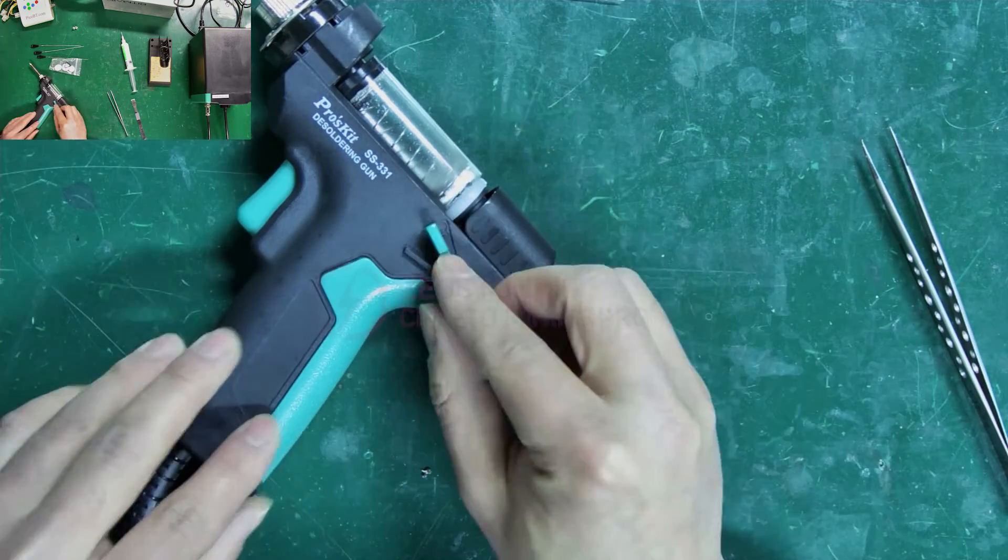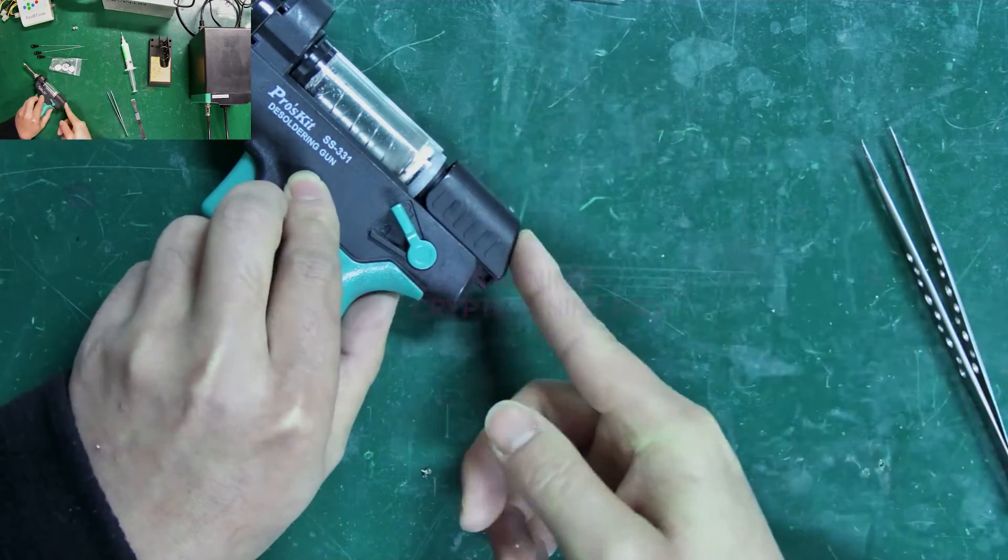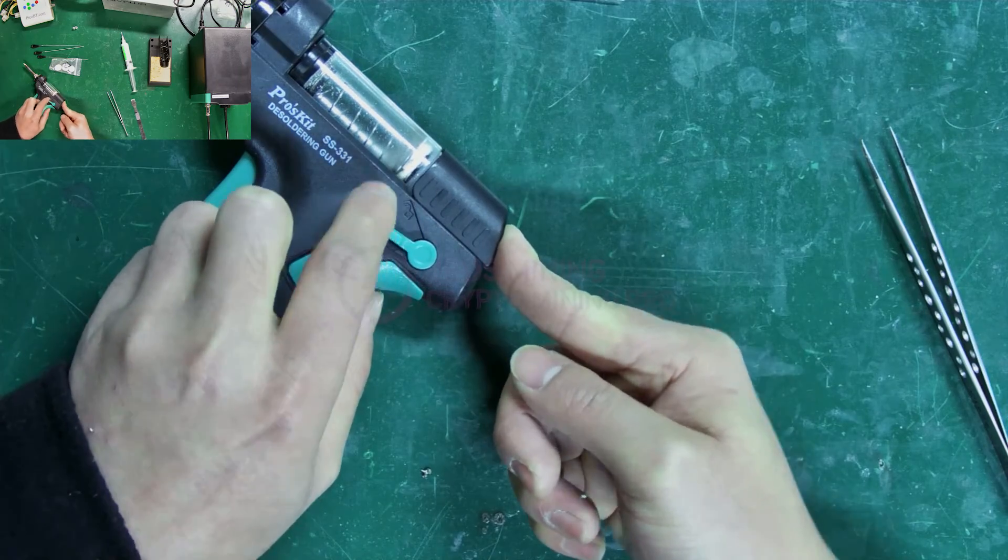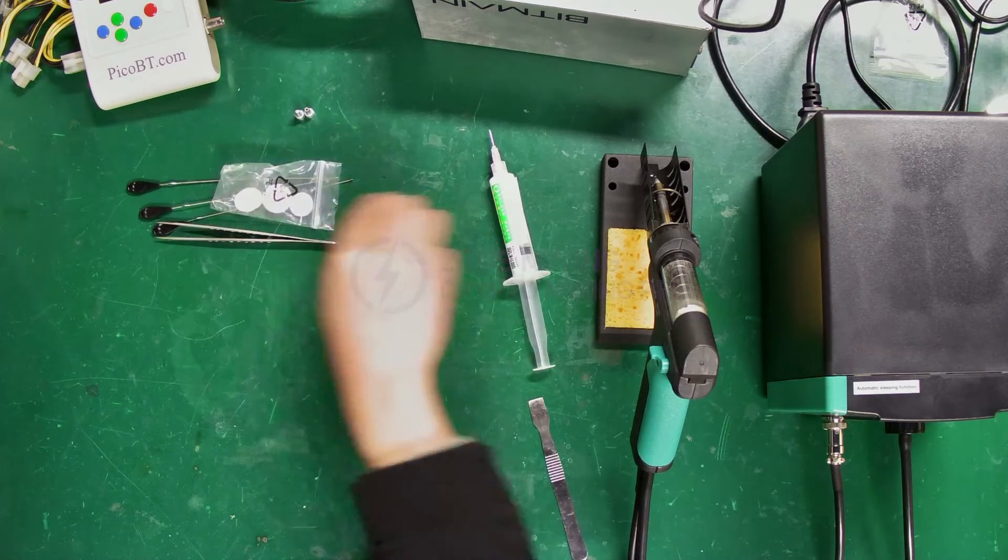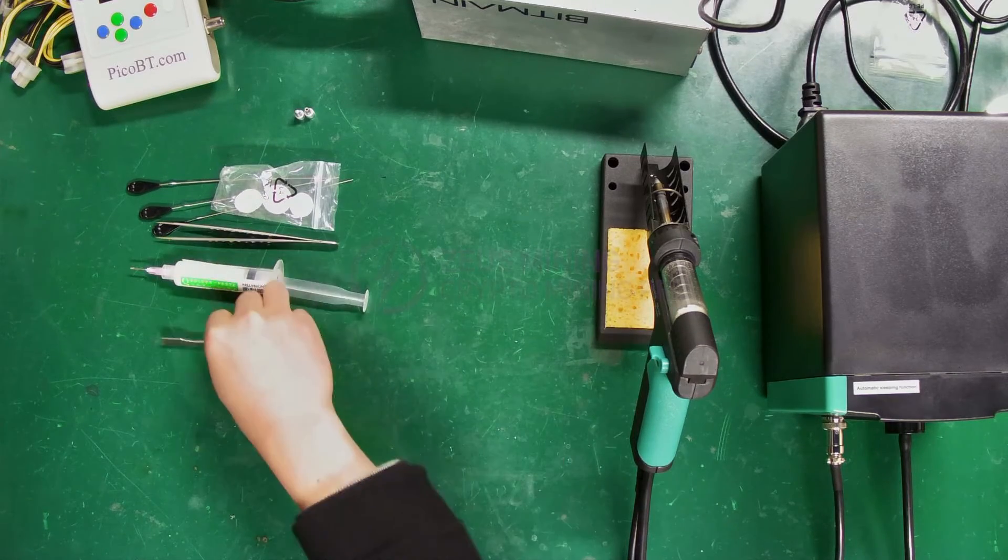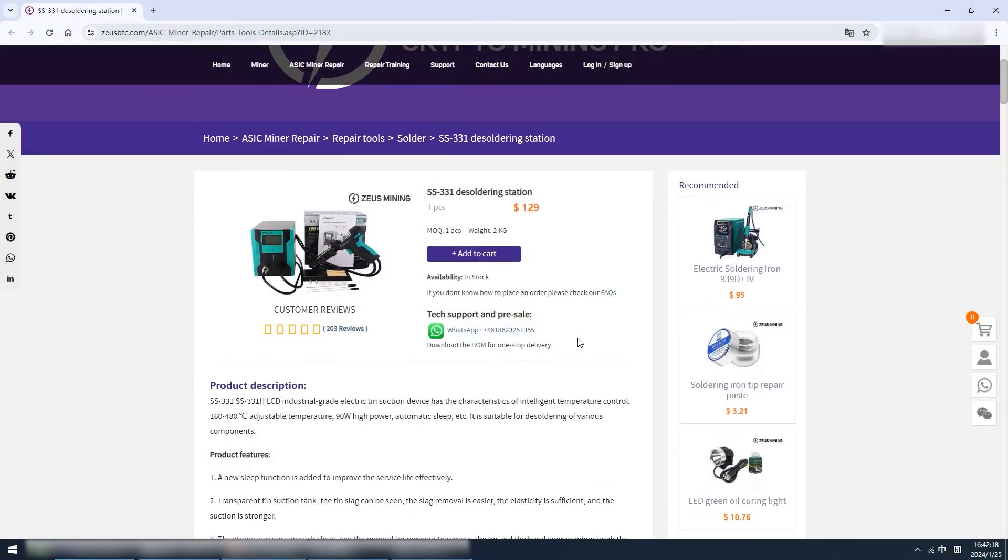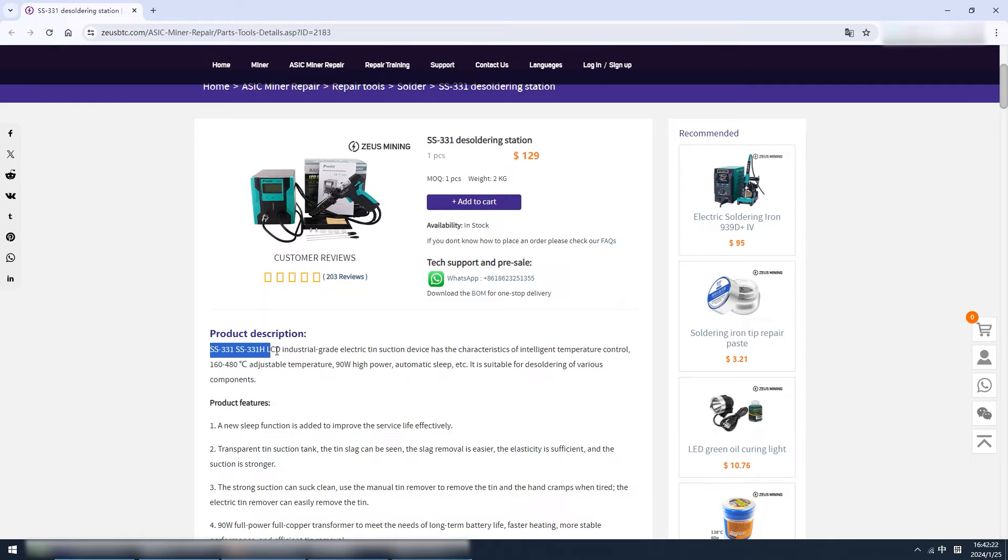After all these steps, reinstall it back. That's how to use the electric desoldering gun. Convenient and fast, speeding up repair work. We welcome your inquiries and orders.